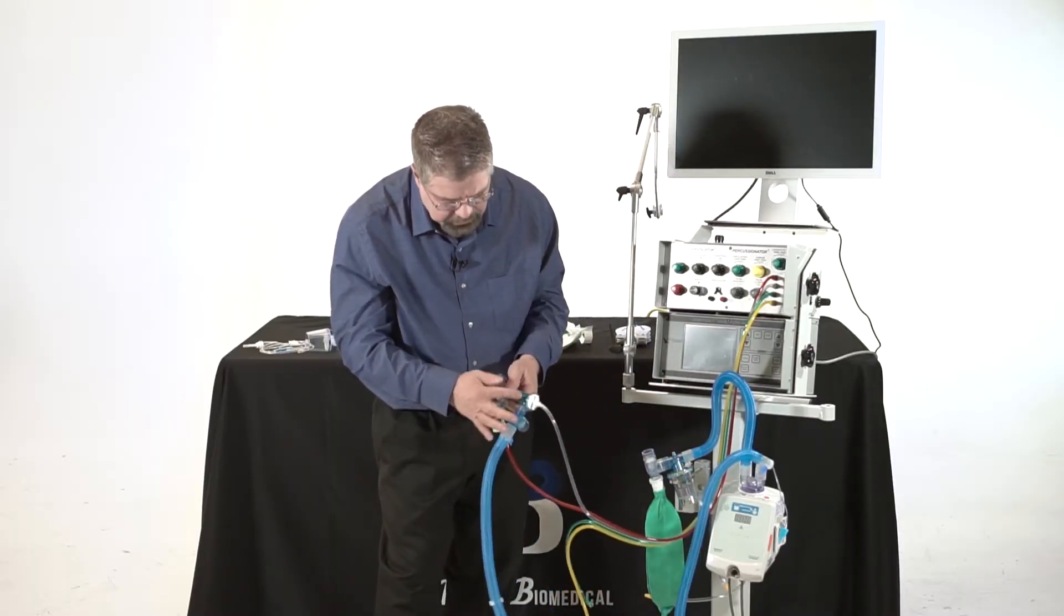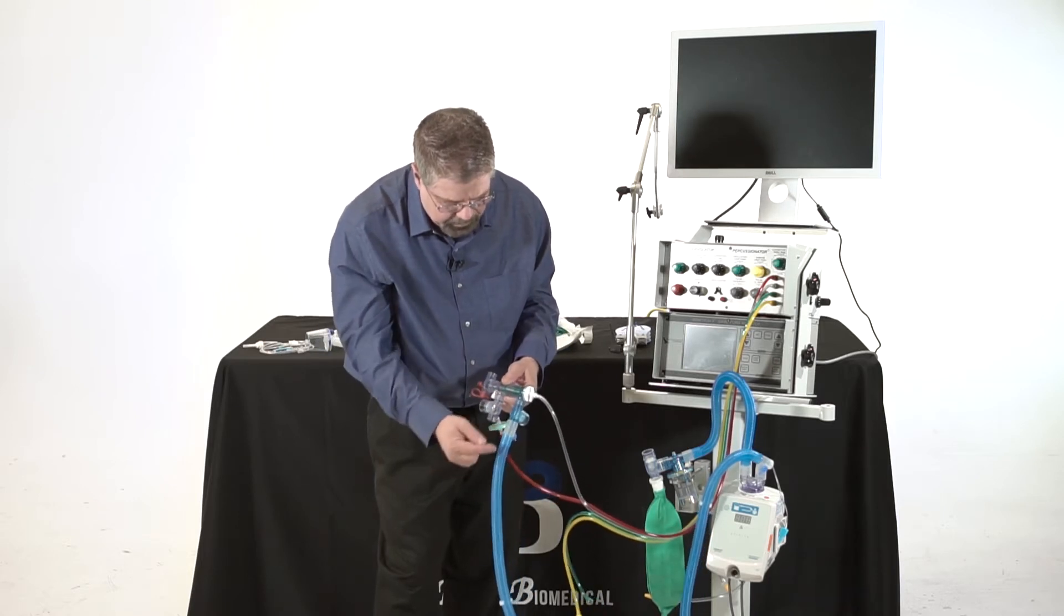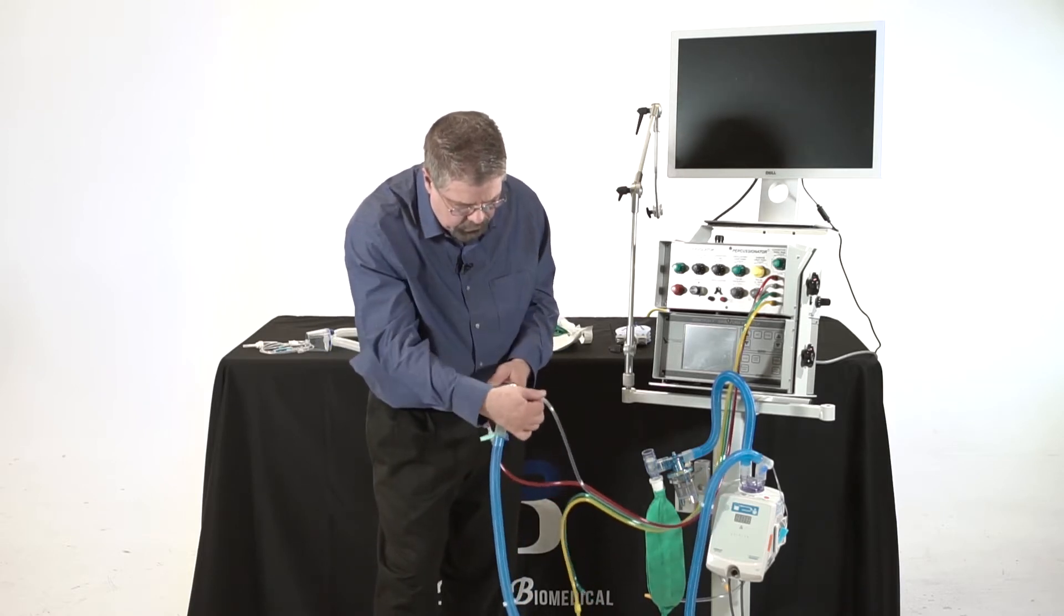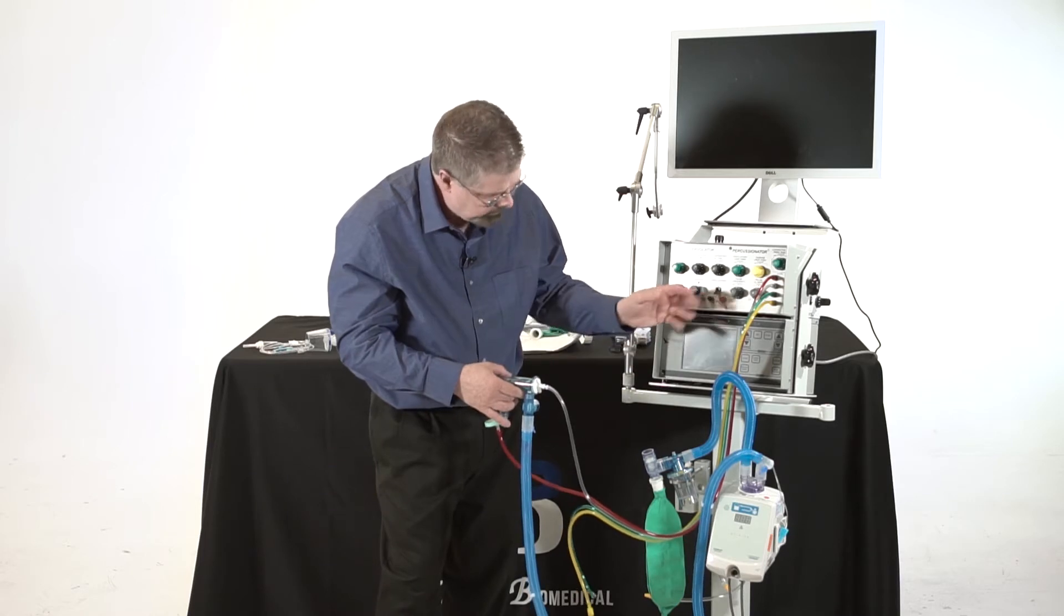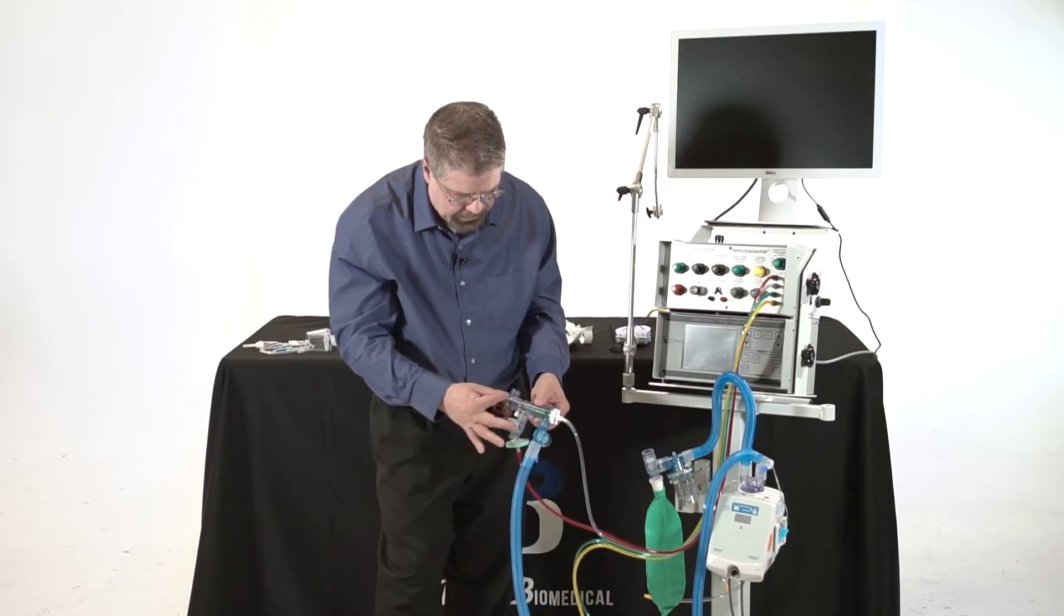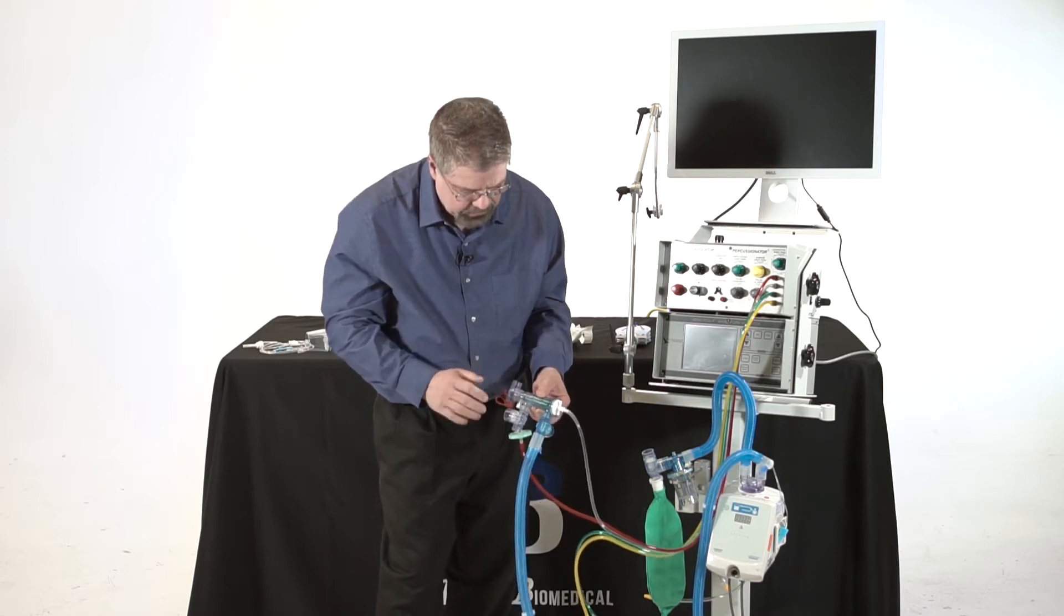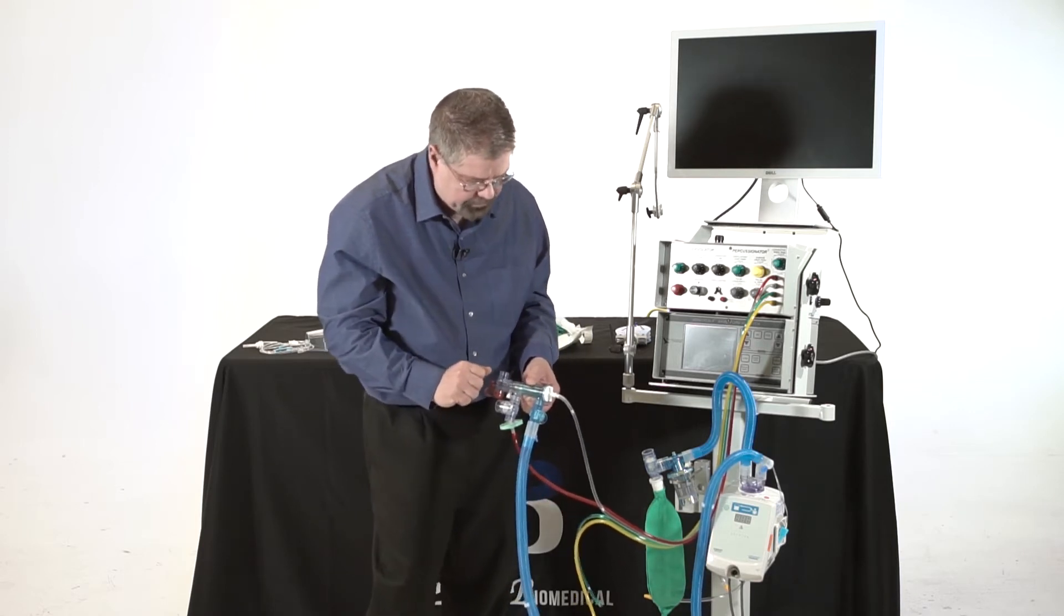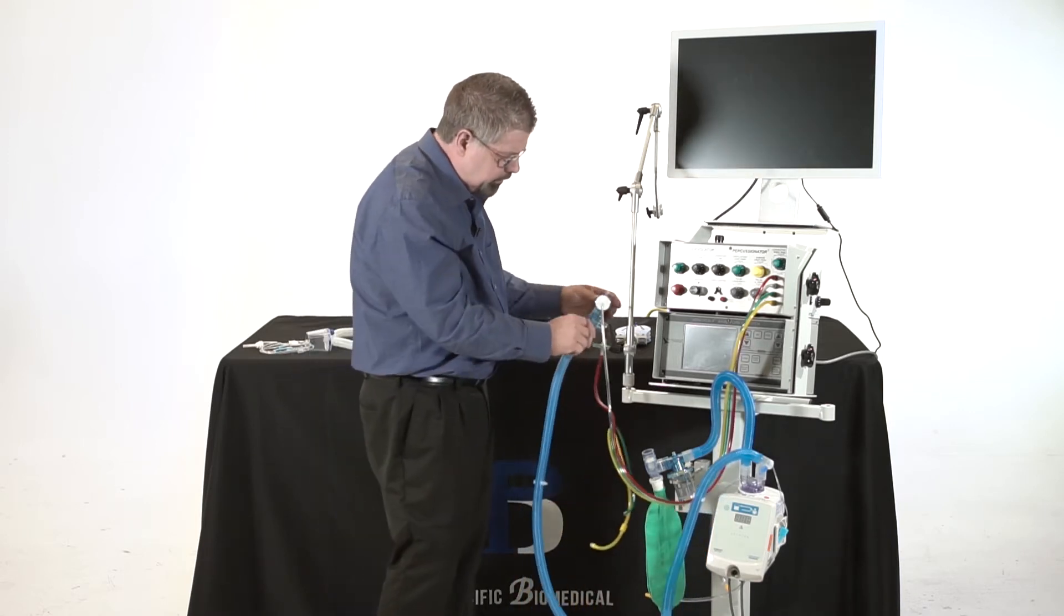I have my inspiratory limb going here. In another video we'll talk about the physics of the phasotron, but basically you and me build flow from the ventilator here, but it also entrains flow. These two flows go together and go out the phasotron. I still got to put my expiratory limb together, so let's put this over here for one second.